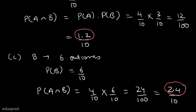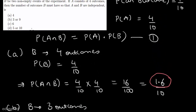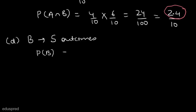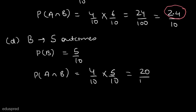Since options A, B, and C are not the answer, option D should be the answer. According to option D, B should have either 5 outcomes or 10 outcomes. Let's first check what happens if B has 5 outcomes. The probability of B will be equal to 5 divided by 10, and the probability of A intersection B will be equal to 4/10 multiplied by 5/10, which equals 20 divided by 100, or 2 divided by 10. This makes sense — we have a natural number here. We can interpret it as: A has 4 outcomes, B has 5 outcomes, and the common outcomes are 2.